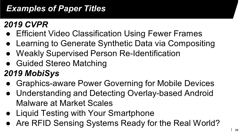Let's consider a few examples of paper titles. The first few come from the 2019 Computer Vision and Pattern Recognition conference. Examples include: 'Efficient Video Classification Using Fewer Frames,' 'Learning to Generate Synthetic Data via Compositing,' 'Weakly Supervised Person Reidentification,' and 'Guided Stereo Matching.' Do you think these titles clearly explain what the papers are about?